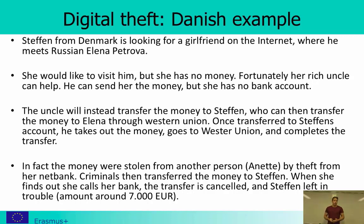Fortunately she has a rich uncle who can help. He can send her the money, but she has no bank account. So instead, the uncle will transfer the money to Stefan, who can then transfer the money to Elena through Western Union — an untraceable transfer. Stefan waits for the money to appear in his account, and when it arrives, he goes to the bank, takes out the money, and transfers them to Elena.